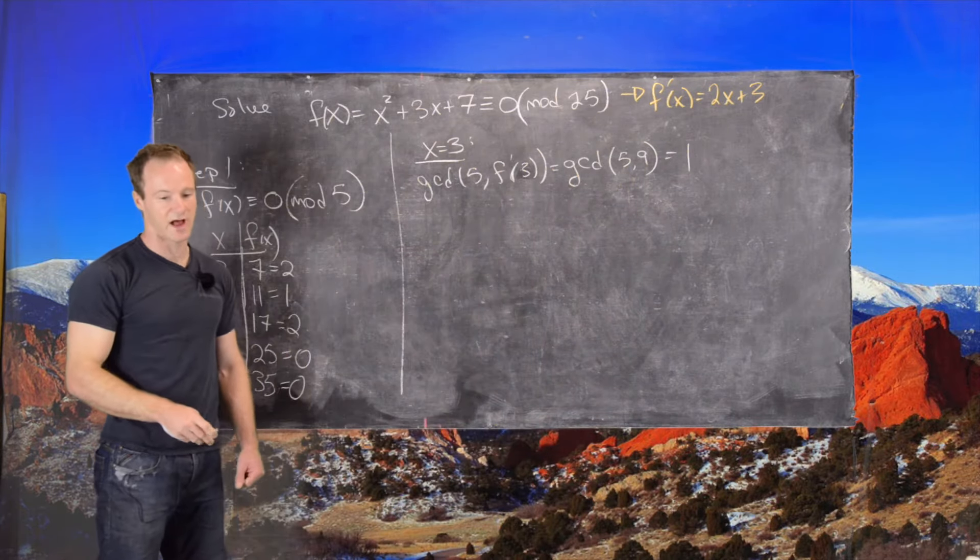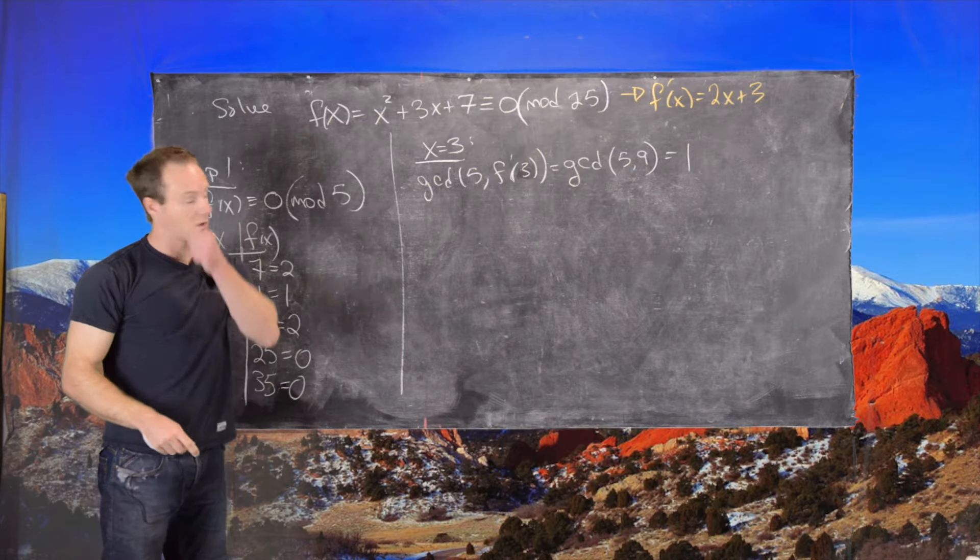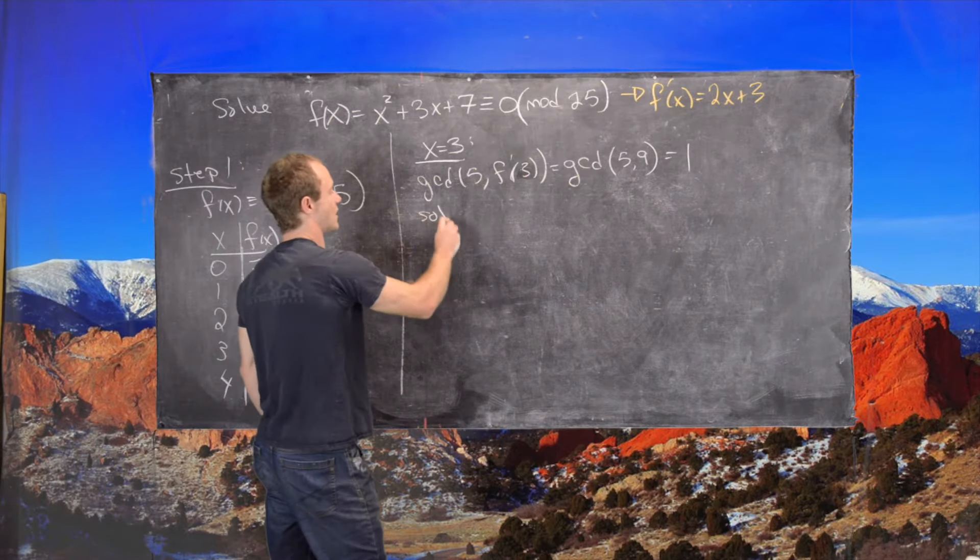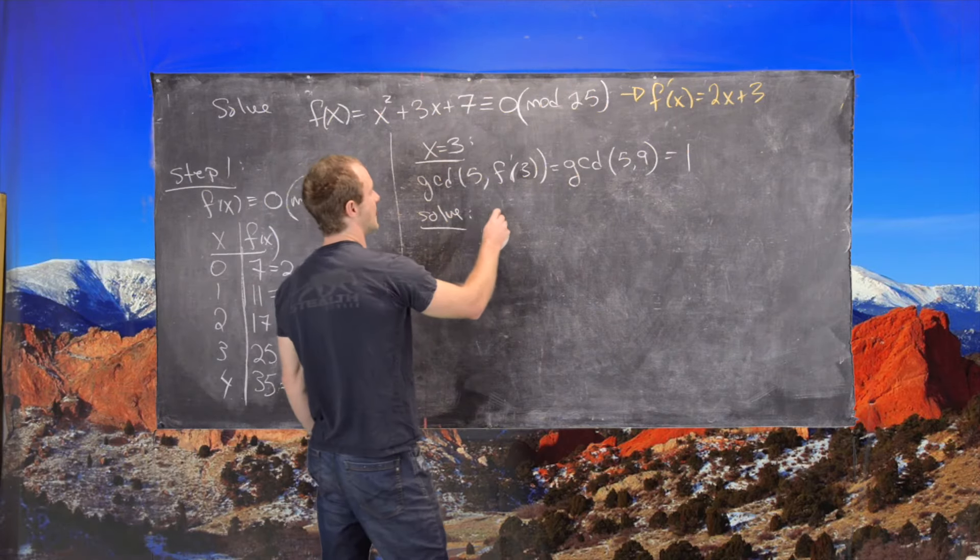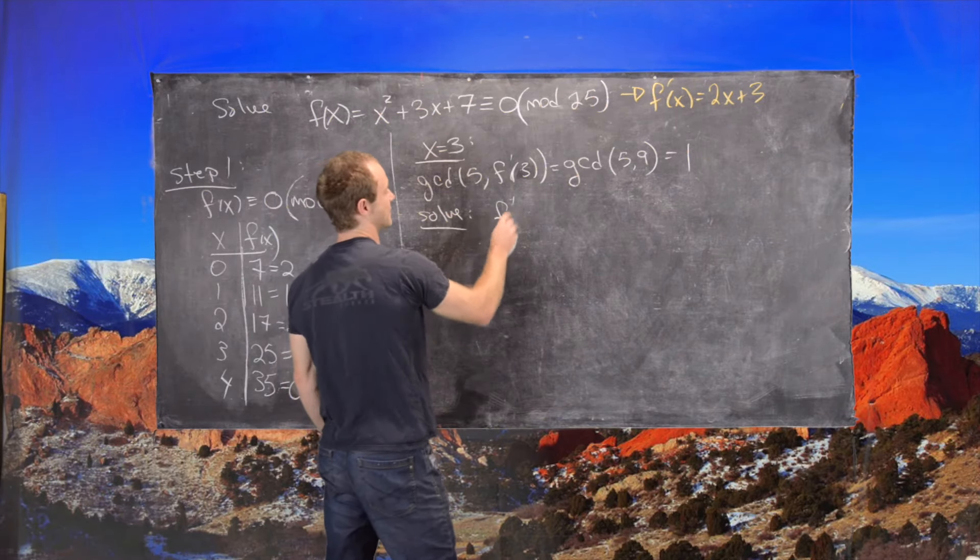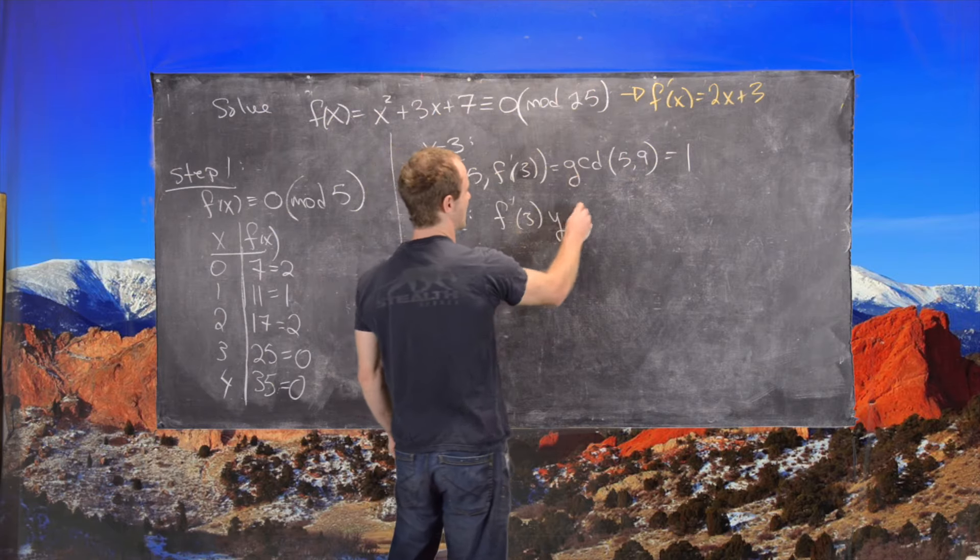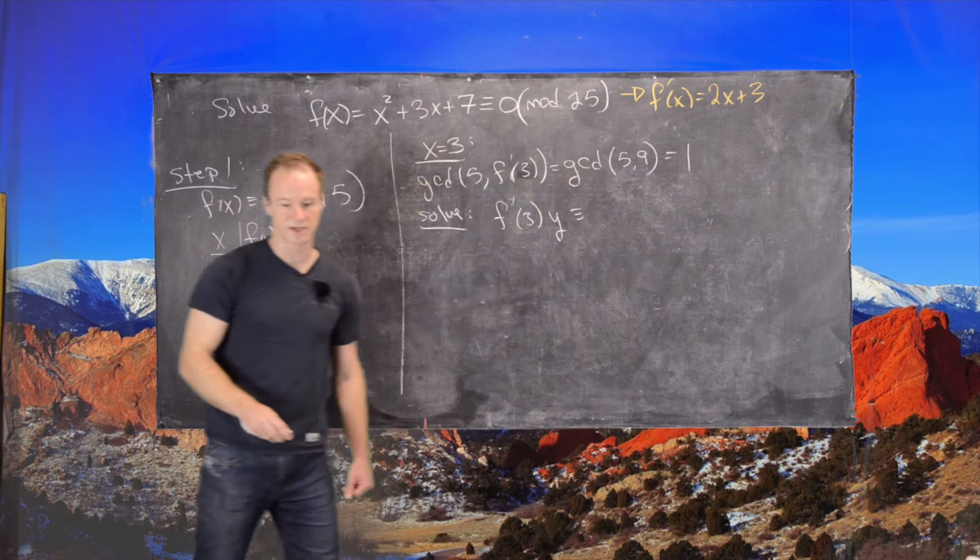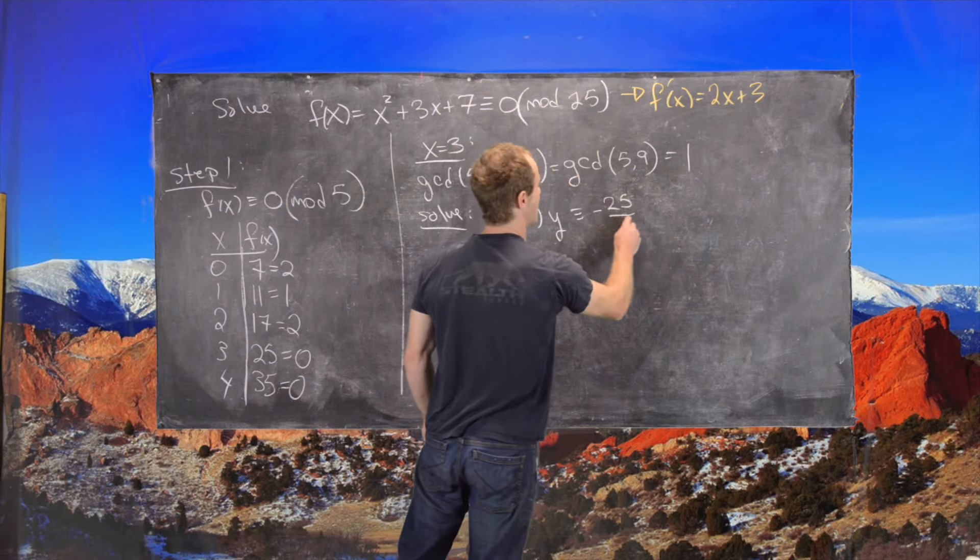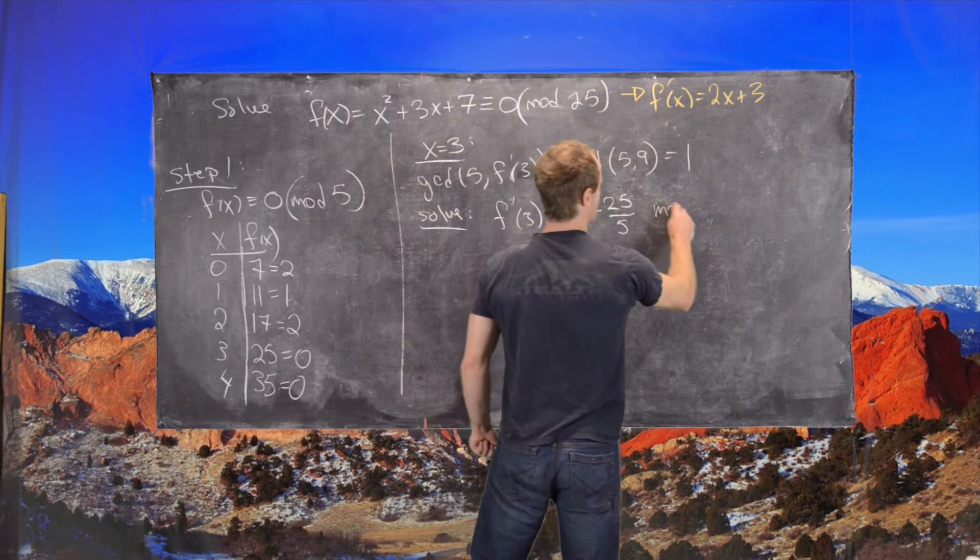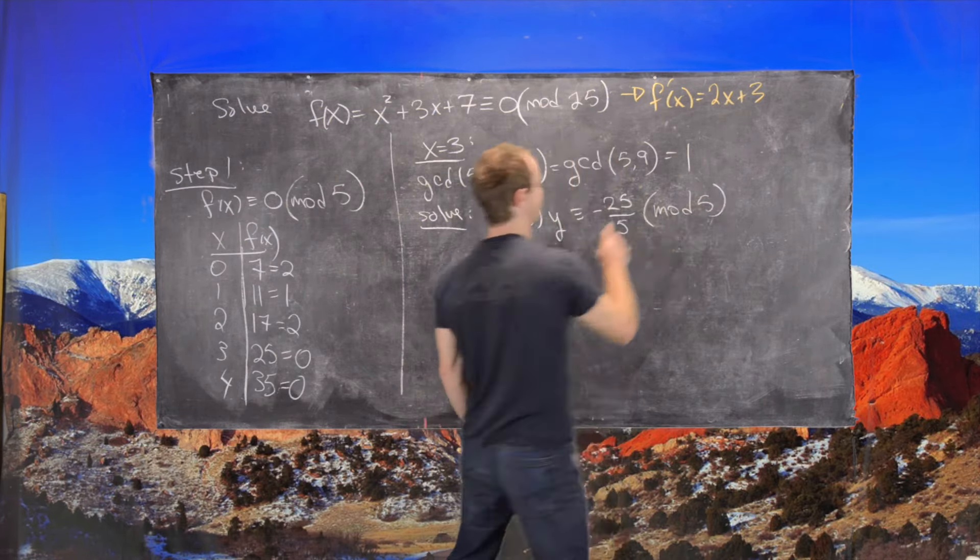So that means we can apply the theorem. And so what we'll want to do is solve the linear congruence given by f prime of a, so f prime of 3 times y is congruent to negative 25 over 5 mod 5. Good.